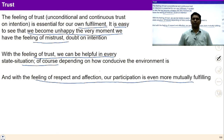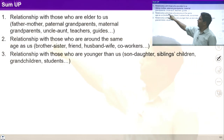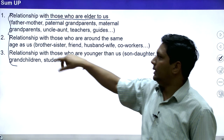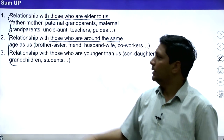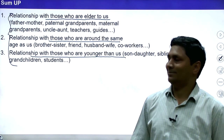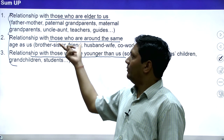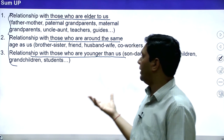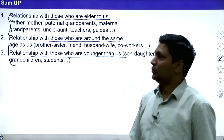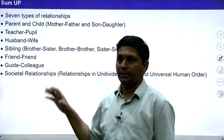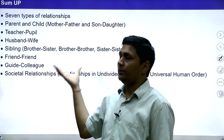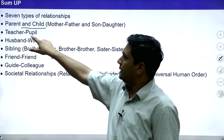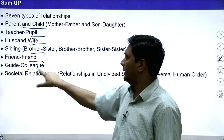Let's sum up the whole lecture. We identified three age groups of people around us: those who are elder than us, those who are around the same age, and those who are younger than us. Taking these three relationships as background, we can categorize relationships into seven types: parent and child, teacher and student, husband and wife, sibling, friend-friend, guide-colleague, and societal relationship.